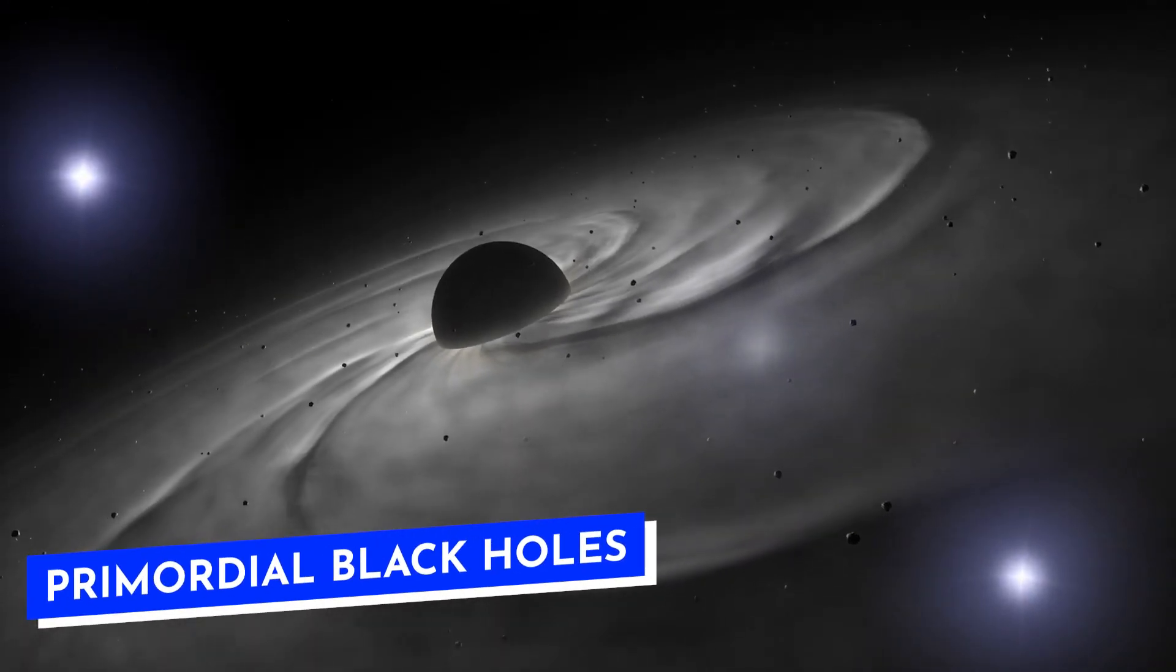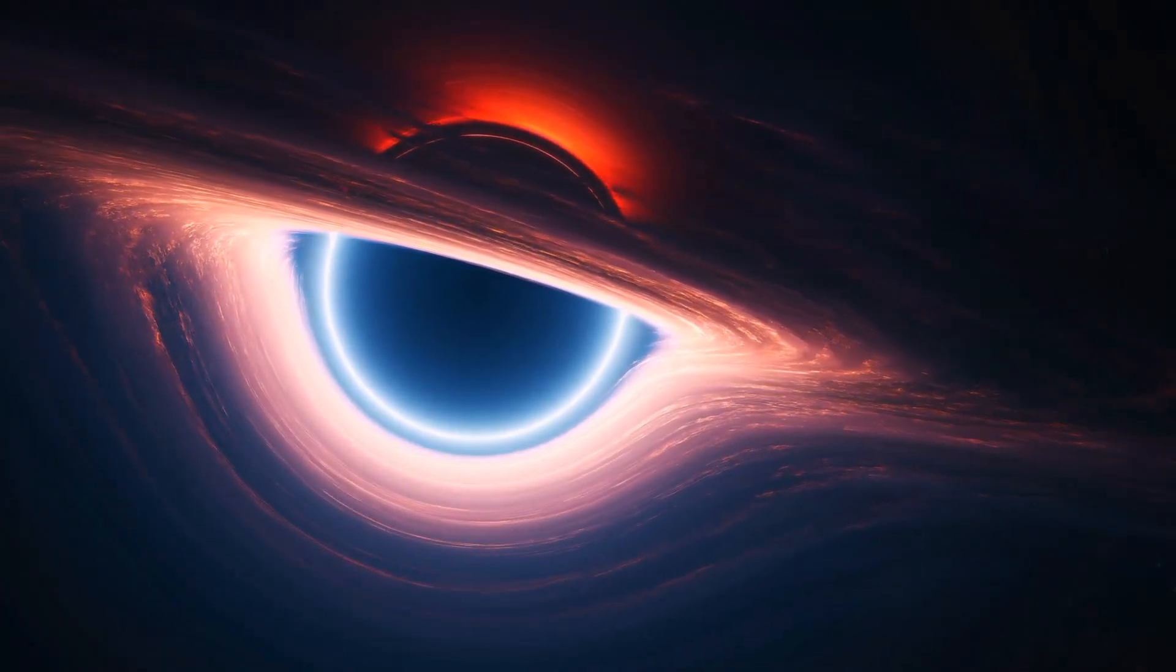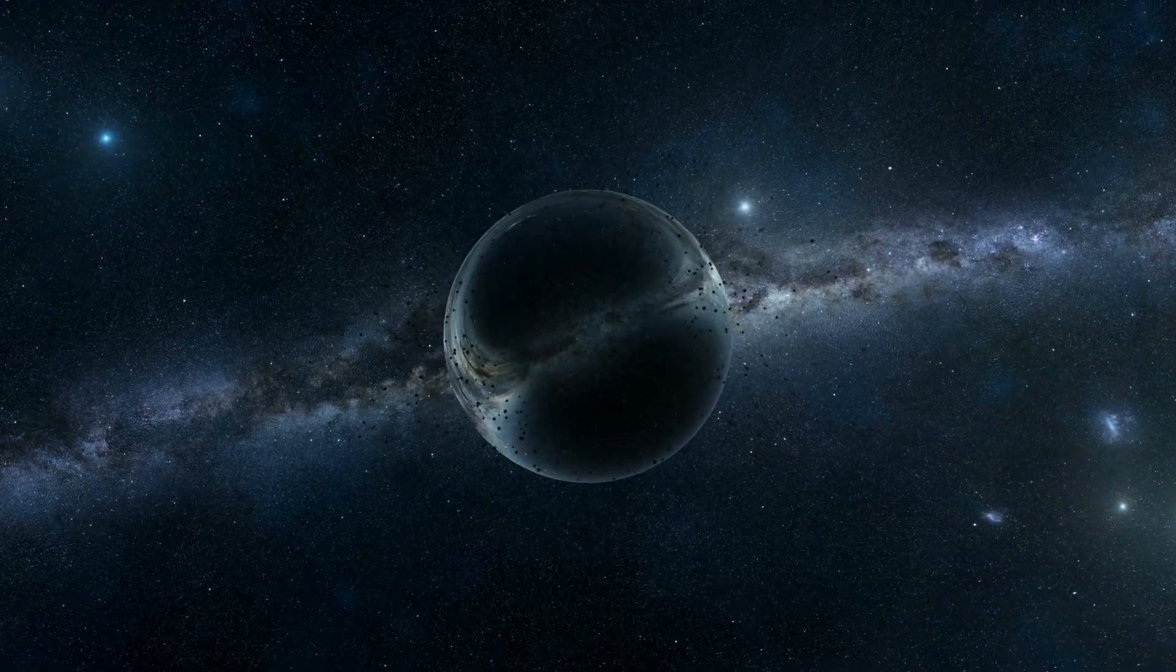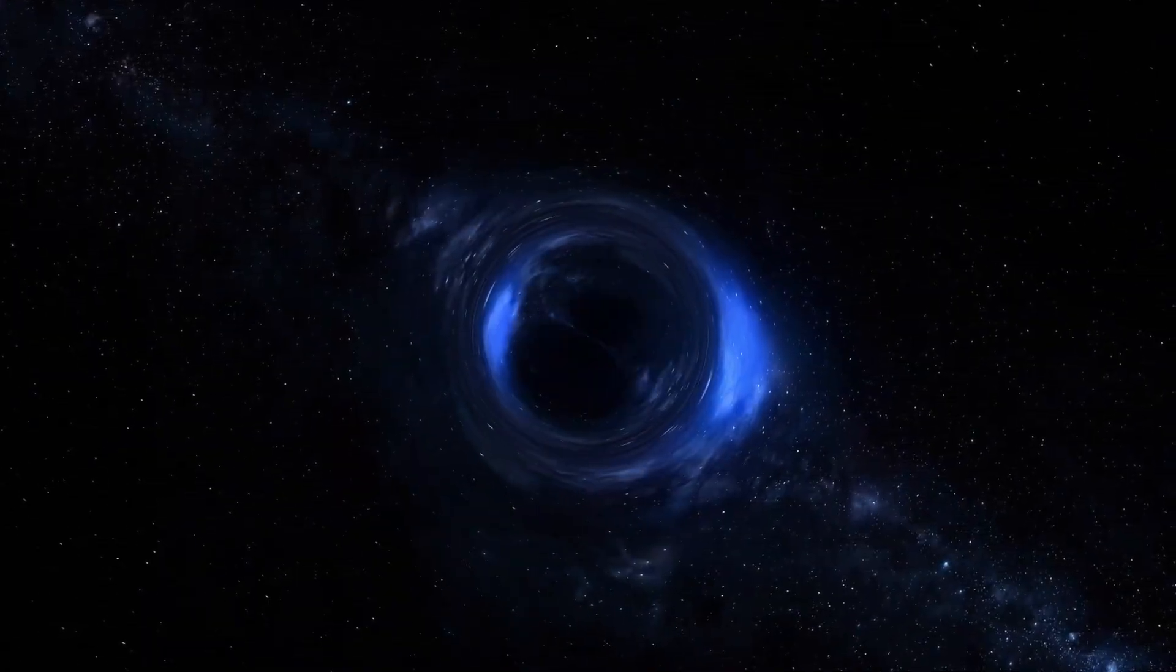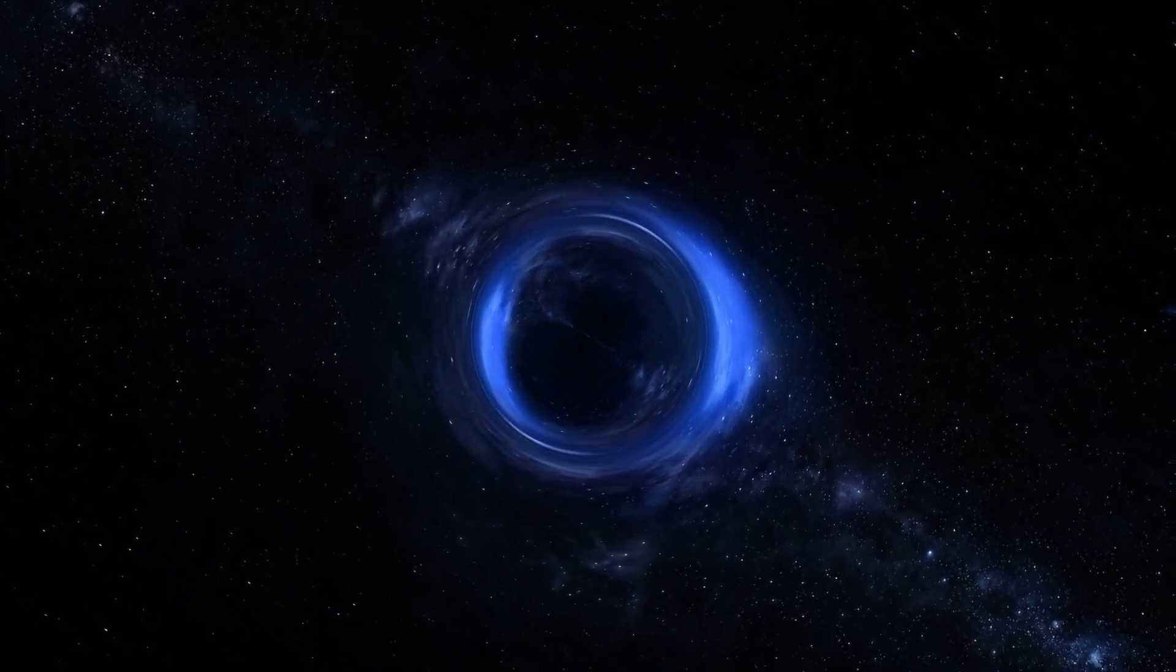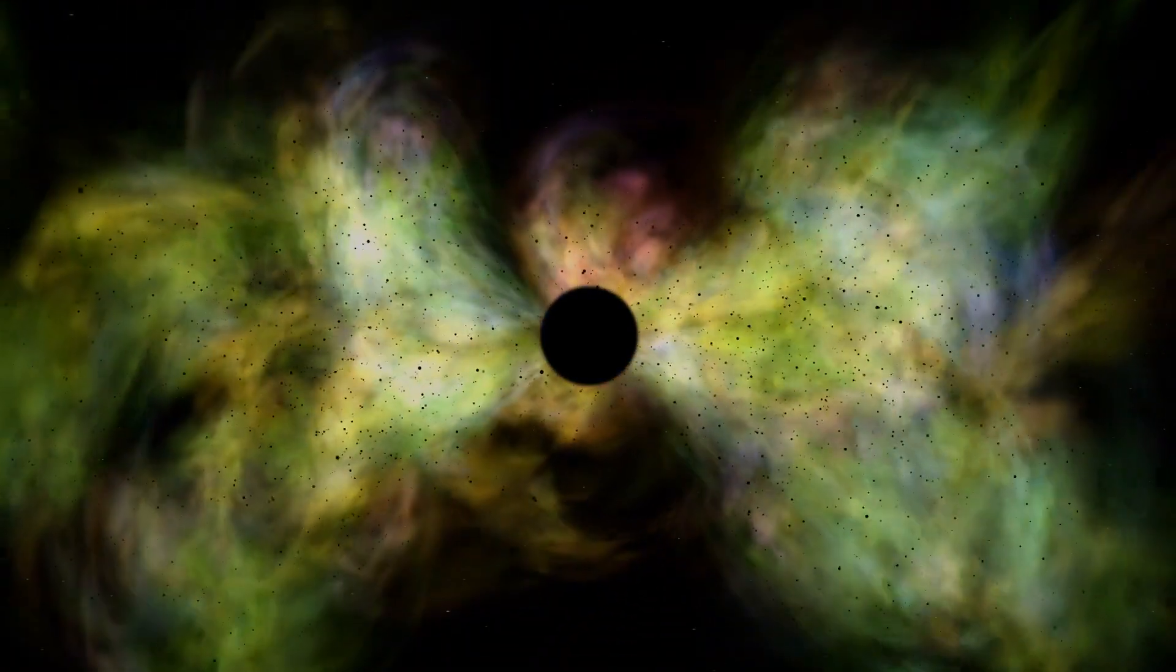Primordial black holes, thought to have started when the universe was a baby, are different from the usual black holes we think of. Some space theory experts think these ancient things could be what dark matter is. Talking about black holes, some people think dark matter could make hair-like shapes around them, something that, if proven true, would help us really get how the universe works.